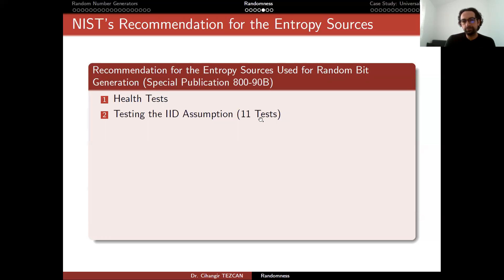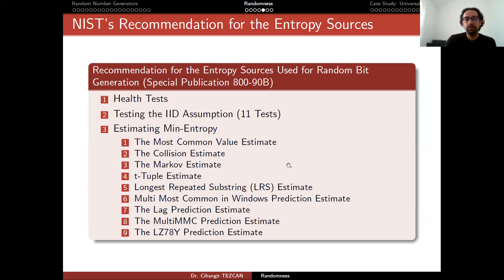So if it fails IID assumption or the manufacturer never claims such a thing, then you perform a min entropy estimation test which are written here. The idea is as follows. If the device doesn't satisfy IID assumption or it is never claimed that it has IID assumption, then these tests are performed and the minimum of these tests are taken as the min entropy.